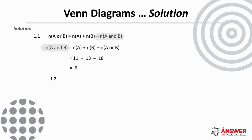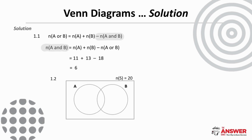For 1.2 we create a sample space of a total of 20 elements with two circles representing events A and B. From 1.1 we know that the number of elements in A and B — in other words in the overlap — is 6. We can then calculate the number of elements in A only by subtracting 6 from the 11 elements in the whole of A, and the same for the number of elements in B only. We then check the total by adding 5, 6, and 7 to get 18 elements, which means that with a total of 20, two elements must be outside of A and B. And that is our Venn diagram.